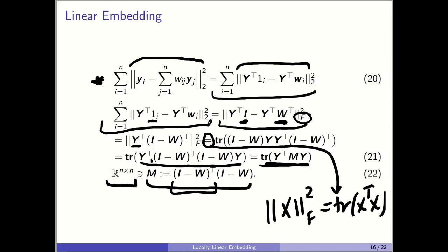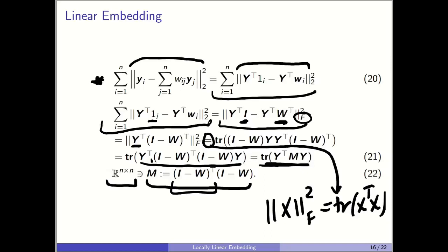We assume the k-nearest-neighbor graph is connected — we choose k large enough so the graph has no disjoint parts. When the graph is connected, M has exactly one zero eigenvalue. Therefore the zero-mean constraint is already satisfied, so we can ignore it and solve the optimization with only the covariance constraint.